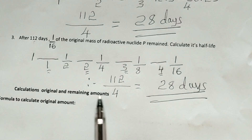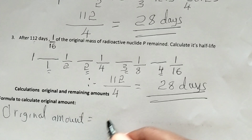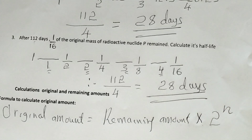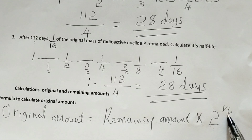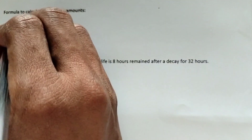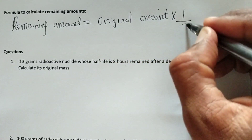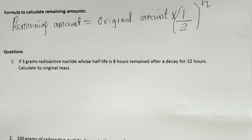Now we have calculations involving original and remaining amount. To calculate the original amount, the formula is: original amount equals remaining amount times 2 to the power n, where n is the number of periods and 2 is constant. To calculate the remaining amount, the formula is: remaining amount equals original amount times 0.5 to the power n, where n is the number of periods. The number of periods n equals total time taken divided by half-life.